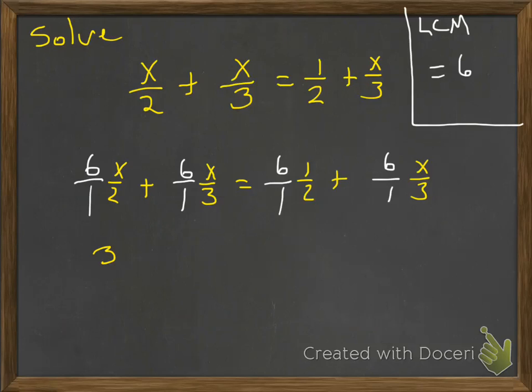Okay. So the first one, we have 6 over 1 times x over 2. 2 goes into 6 three times. We're left with 3x. Plus 6 over 1 times x over 3. The 3 goes into 6 twice, that's 2x. Equals 6 over 1 times a half, which is going to be 3. And then 6 over 1 times x over 3 is going to be 2x.